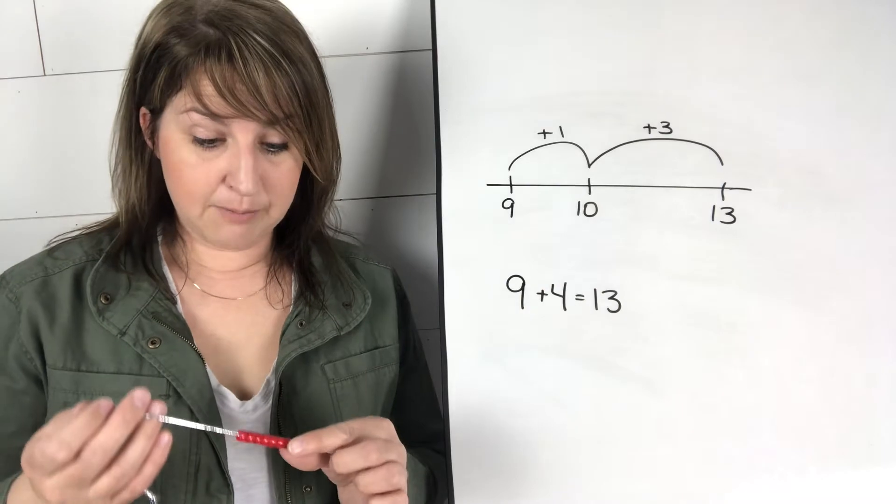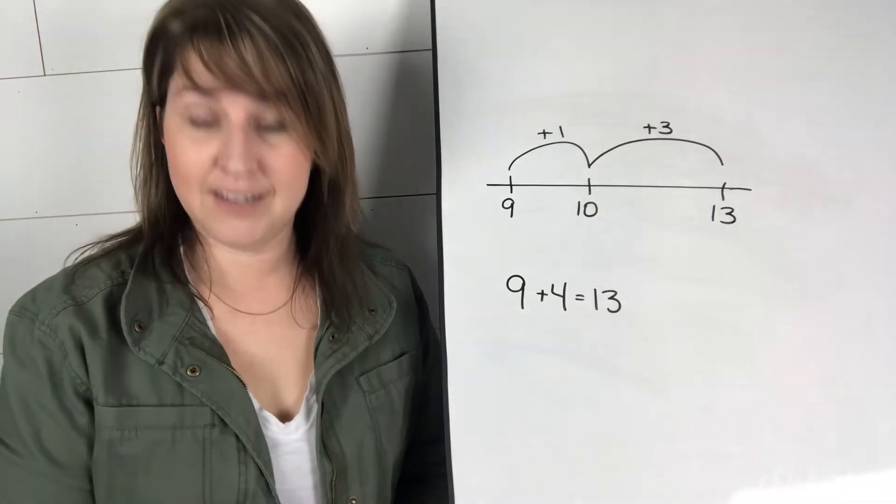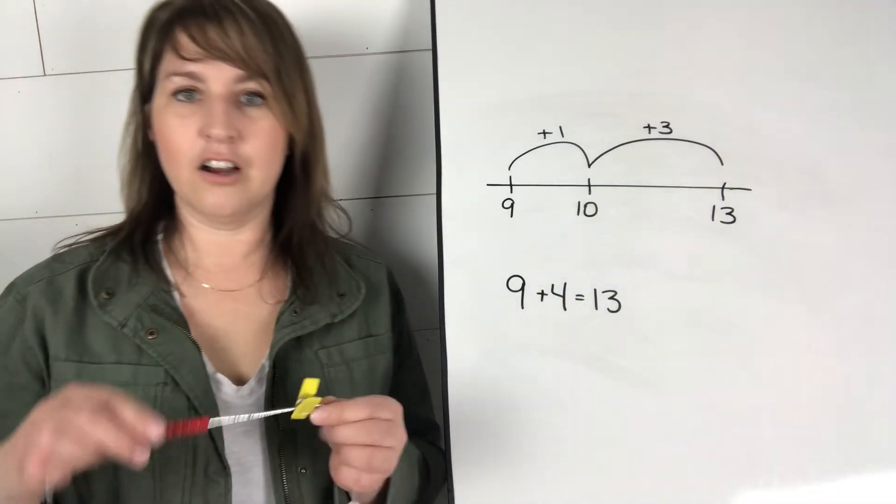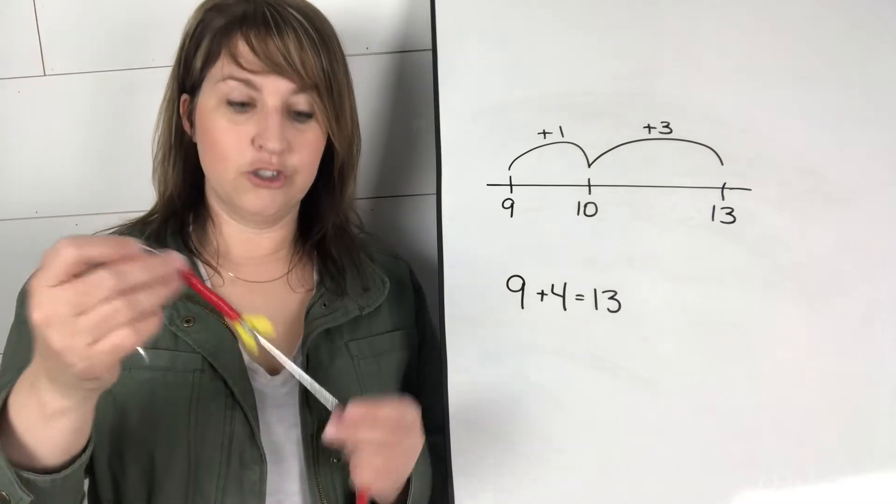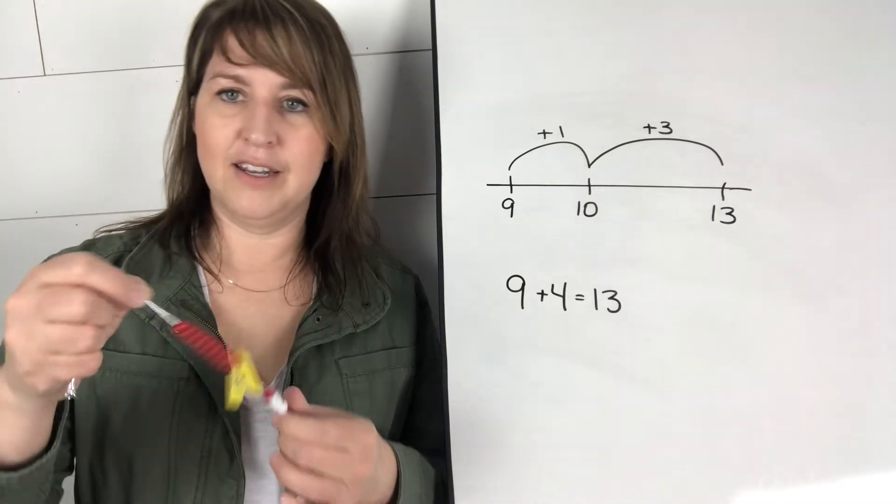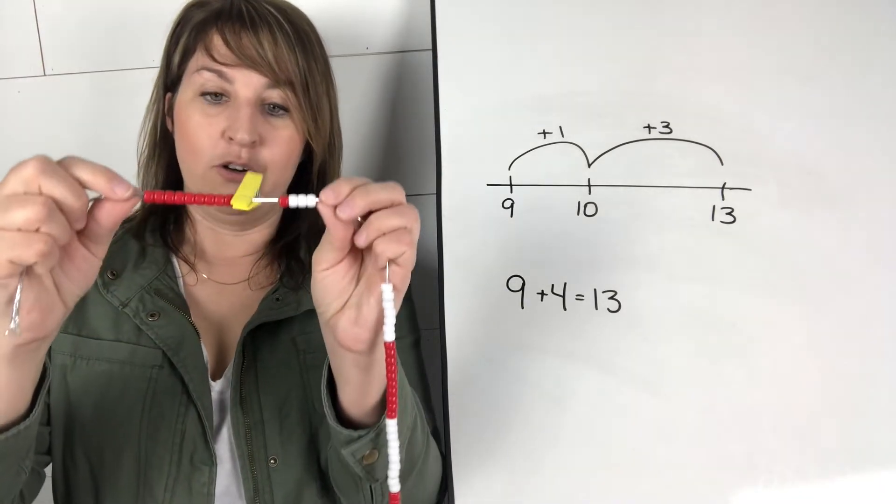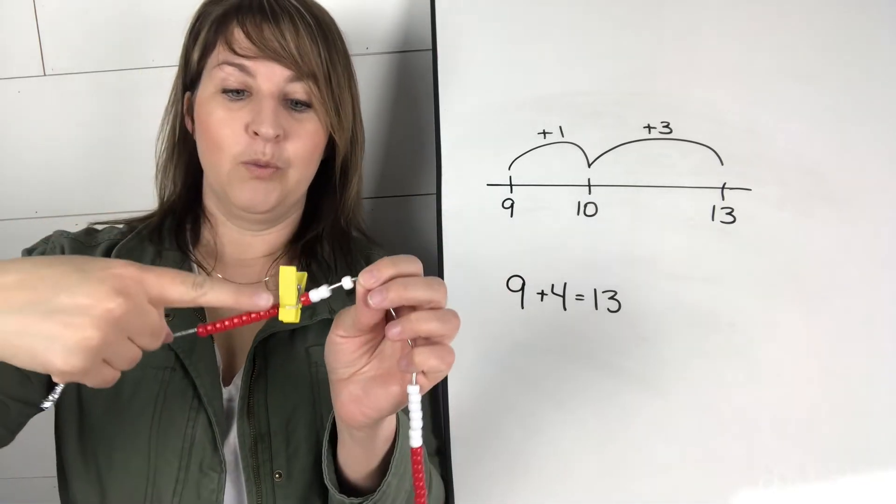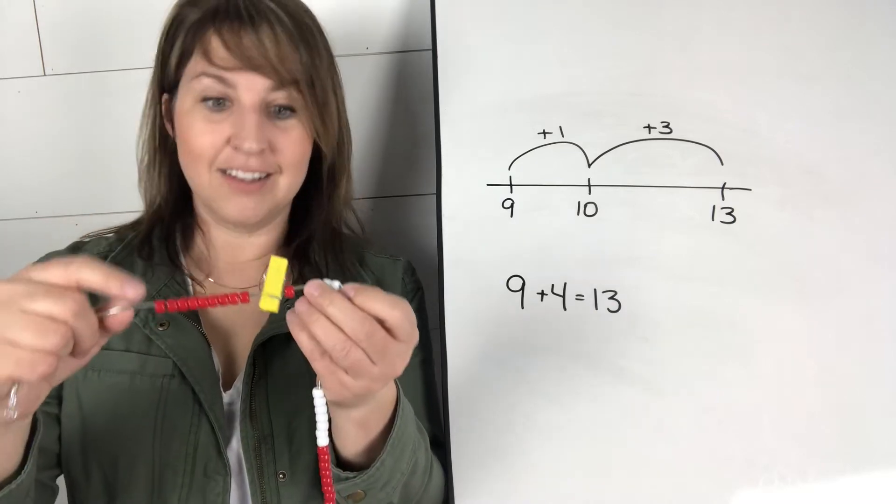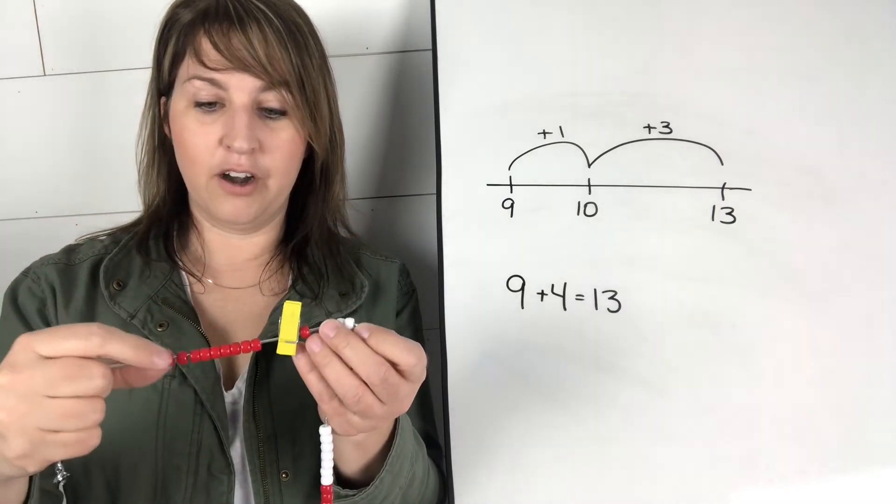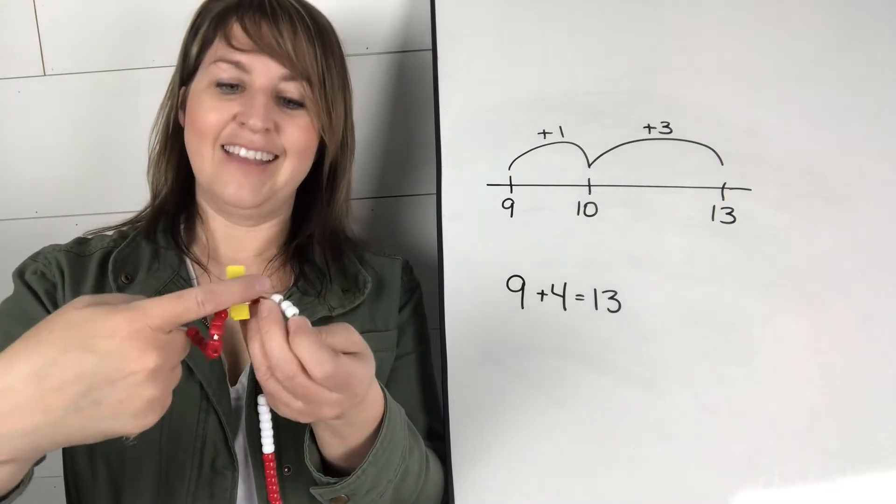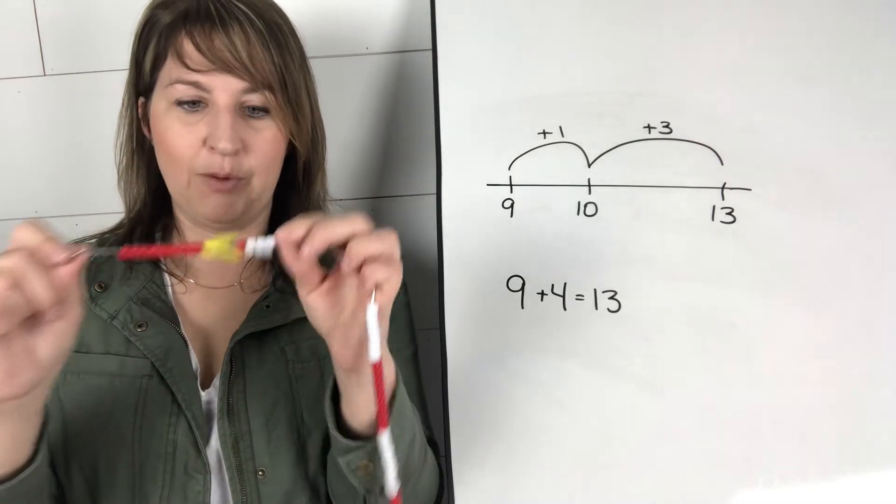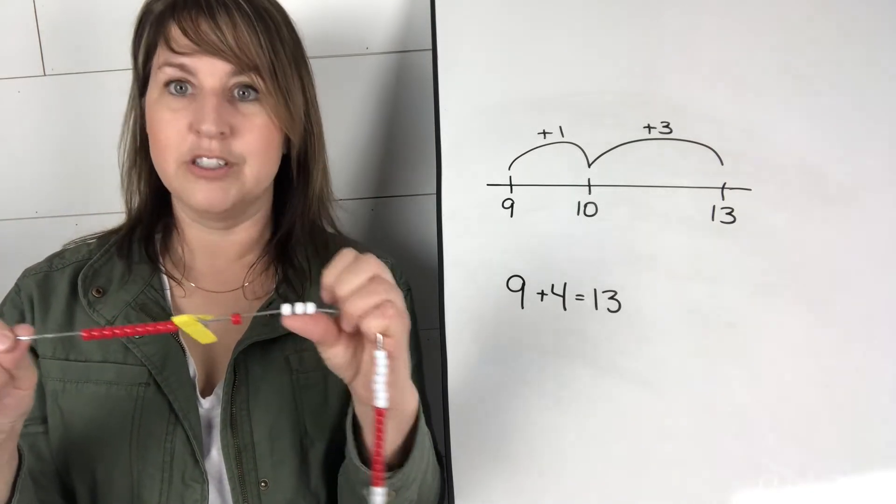Now let's take a look at what a difference it might make when we use a beaded number line. So here we can ask our students to show nine plus four on the beaded number line. Now here we have nine on one side, four on the other. Now what do you see here? Well, it's really apparent that to add nine plus four, we would start with nine, add that one more to make 10, and then we have just those three whites left over to make 13.